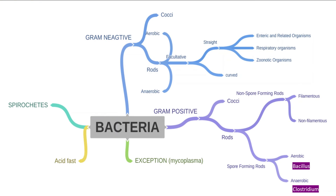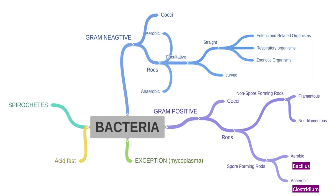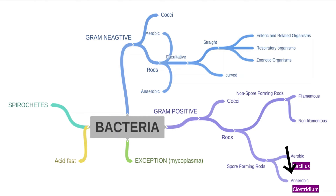Before a deep look at Clostridium tetani, here is a quick overview of bacterial classification. Bacteria are classified into spirochetes, acid-fast bacteria, and Mycoplasma as an exception. They are also classified by gram staining into gram negative and gram positive, each further divided into cocci and rods. Gram positive rods are further classified into non-spore forming and spore forming rods.